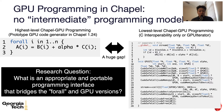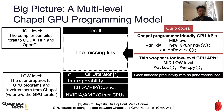Suppose the automatic compiler approach does not give sufficient performance improvement, and you end up rewriting a low-level GPU version. As you can see, there's a huge gap between the two versions, even though their computation part is fairly simple. So in this talk, we will address this research question: what is an appropriate and portable programming interface that bridges the high-level and GPU versions?